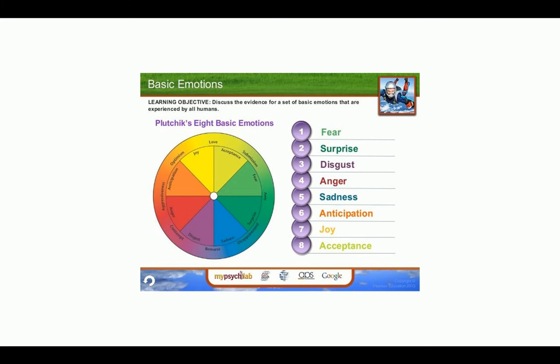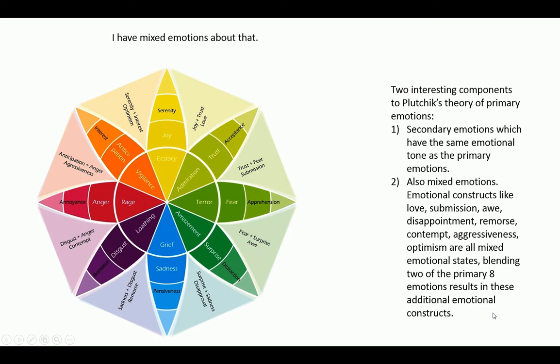One of the behavioral scientists who believes there are eight underlying basic emotions is Plutchik. Plutchik indicates that fear, surprise, disgust, anger, sadness, anticipation, joy, and acceptance are the eight universal emotional states of humans.